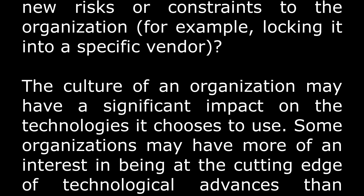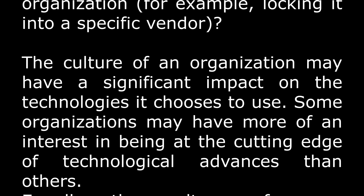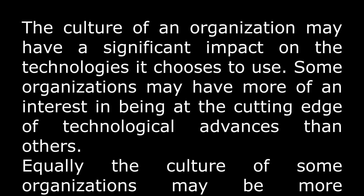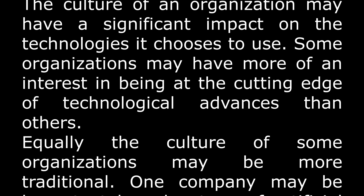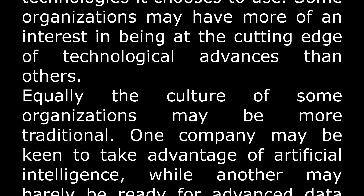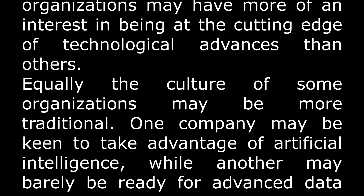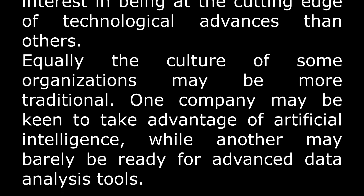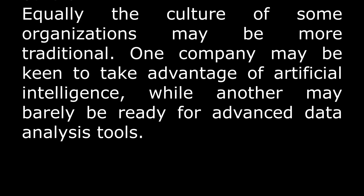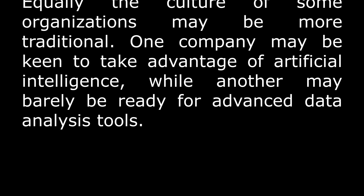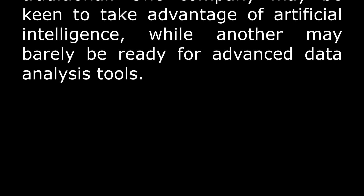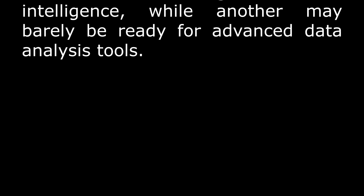Does this technology align with the strategy of the service provider, or its service consumers? Does the organization have the right skills across its staff and suppliers to support and maintain the technology? Does this technology have sufficient automation capabilities to ensure it can be efficiently developed, deployed, and operated? Does this technology offer additional capabilities that might be leveraged for other products or services? Does this technology introduce new risks or constraints to the organization, for example, locking it into a specific vendor? The culture of an organization may have a significant impact on the technologies it chooses to use. Some organizations may have more of an interest in being at the cutting edge of technological advances than others. Equally, the culture of some organizations may be more traditional. One company may be keen to take advantage of artificial intelligence, while another may barely be ready for advanced data analysis tools.